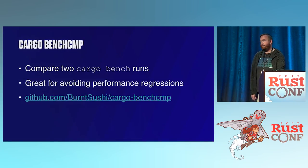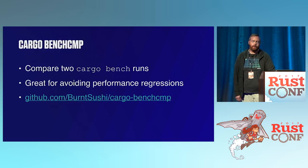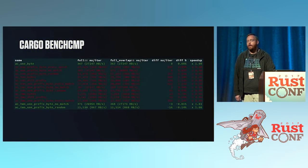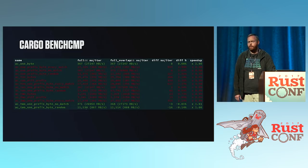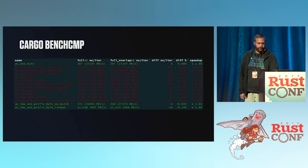Cargo Bench Compare is relatively new and allows you to compare two Cargo Bench runs. It's really great for avoiding performance regressions — someone ships a PR, you try it yourself, and you can do a textual comparison. In this example borrowed from the Cargo Bench Compare GitHub page, you can see it doesn't really make much difference even though there's lots of green and red — the numbers themselves aren't that different.